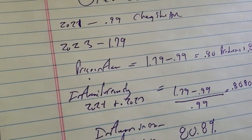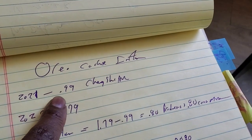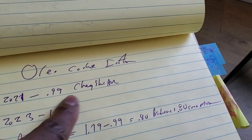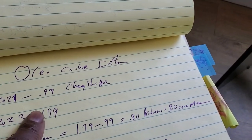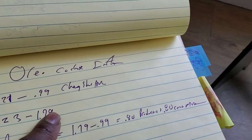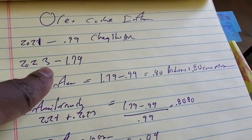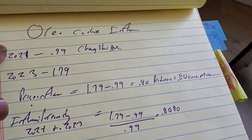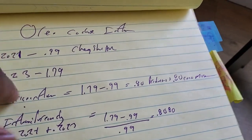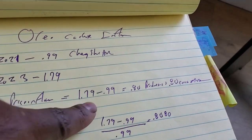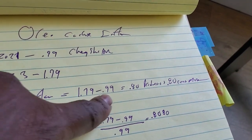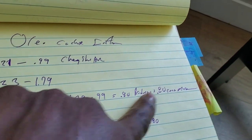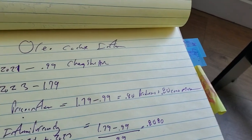Back in 2021, that little Oreo cookie package you buy at Chevron was 99 cents. In 2023, I bought one yesterday — $1.79. This is what we call price inflation. What was the price in the past? What is it currently? $1.79 minus $0.99 equals $0.80. So this product has increased 80% — that's the price inflation.